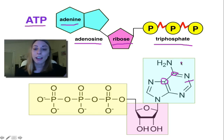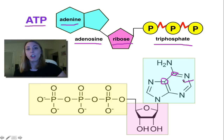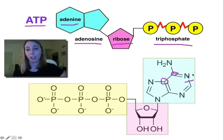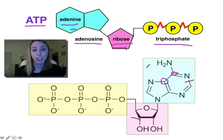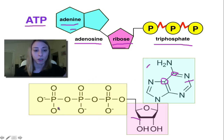As you can see, these are actually flipped. So you can match up the colors — we can match the turquoise here for the adenine, the pink here for the ribose, and then the yellow for all three phosphate groups right here.